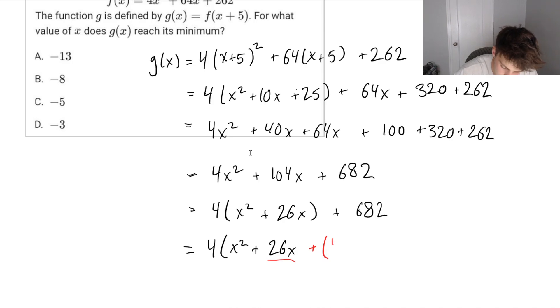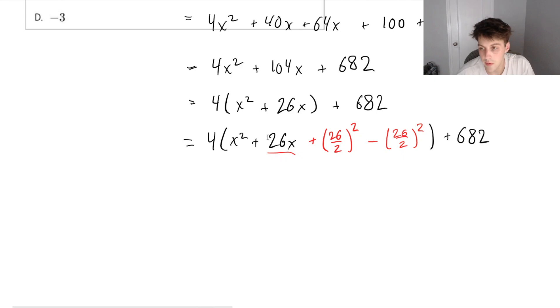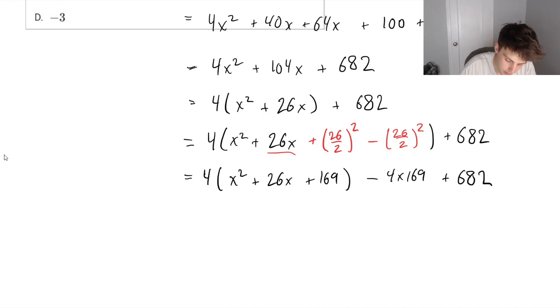That's 26. So half of 26 is 13. So let's write this as 26 over 2 squared minus 26 over 2 squared. And then let's close this off, plus 682. So x squared plus 26x, 13 squared is plus 169. And now, let's close this off. Reminder, we still have minus 4 times 169 plus 682. Now it's a little bit more clear. We can see that we have a binomial here, a binomial squared.